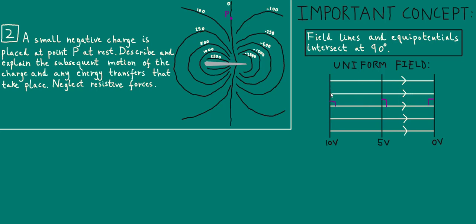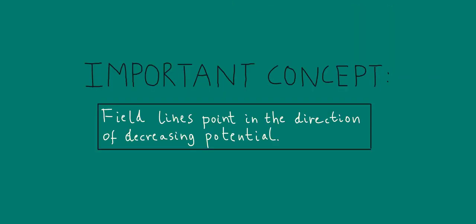For example, in the case of a uniform electric field where the field lines are depicted by straight lines directed to the right, you can see that the equipotentials at 10 volts, 5 volts and 0 volts cross or intersect at 90 degrees to the field lines. Therefore, at point P, we know that the field line should be drawn perpendicular to the equipotential as drawn here. Notice that the direction of the field lines is in the direction of decreasing electric potential. So as we move from left to right, the potential goes from 10 to 5 to 0 volts and the field lines are directed towards the right — in the direction in which the potential decreases. This is another general important concept: field lines point in the direction of decreasing potential.